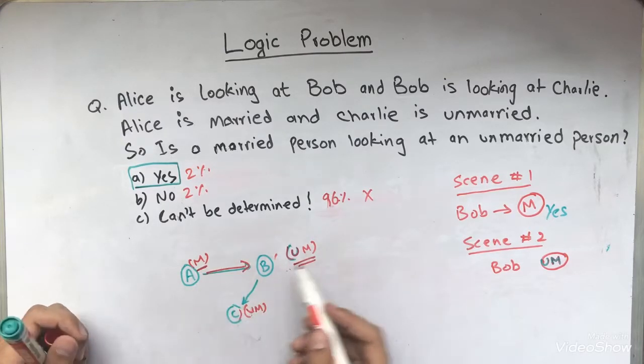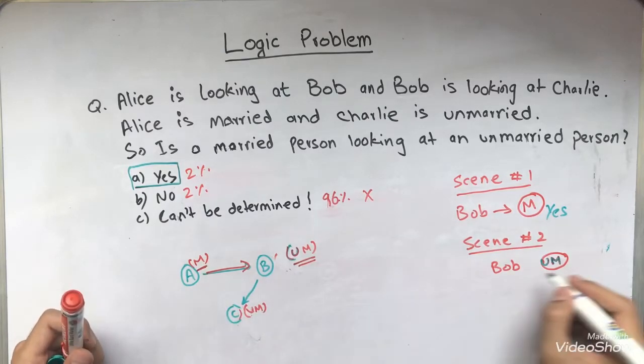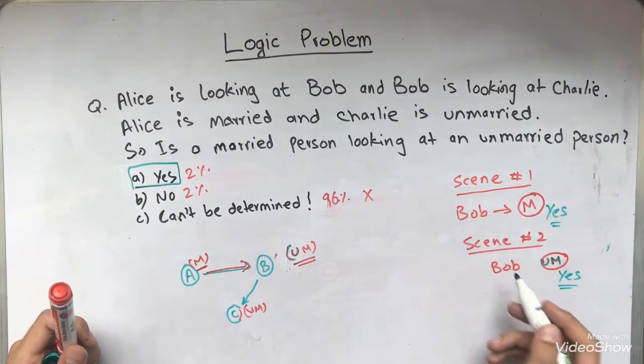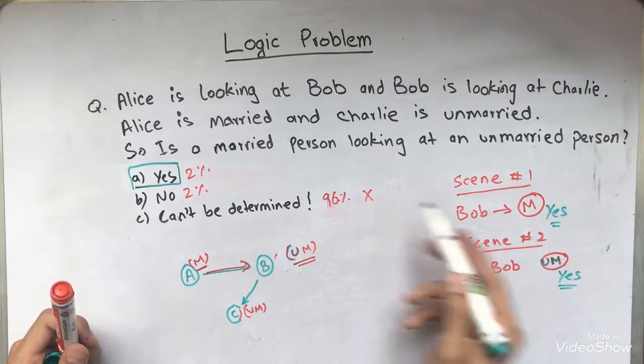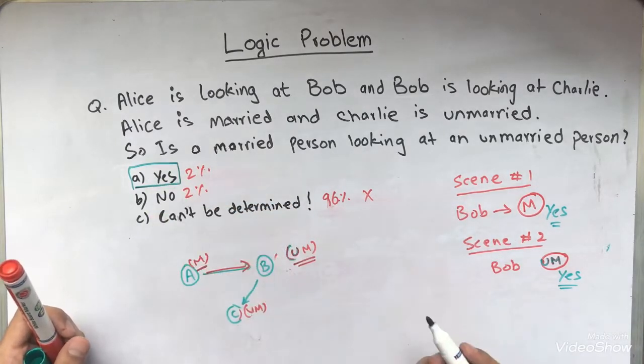So in any case, a married person is definitely looking at an unmarried person. Here, Alice is looking at Bob. So once again, we're going to write a yes with it. So in any case, in both the cases that we wrote down, a married person is definitely looking at an unmarried person. So the answer is yes, in all cases.